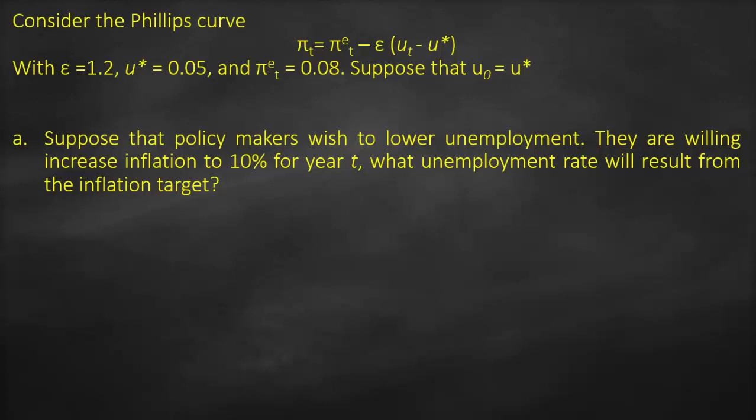Suppose that policy makers wish to lower unemployment and are willing to increase inflation to 10% for year T plus 1. What unemployment rate would result from this inflation target? We have our Phillips curve formula, and what we need to do is put u_t on one side and all other variables on the other side, subtracting expected inflation from both sides.